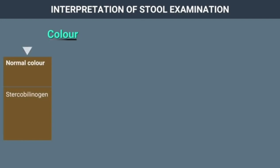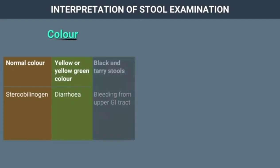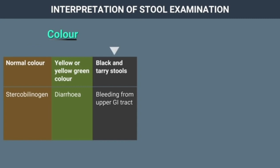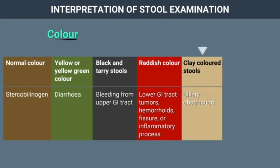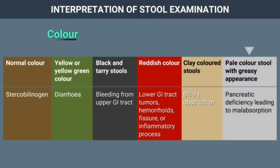Color: Normal color of stool is due to presence of stercobilinogen. Yellow-green color is seen in diarrheal stools. Black and tarry stools may be seen due to bleeding from the upper gastrointestinal tract. Reddish color is seen in lower GI tract tumors, hemorrhoids, fissure, or inflammatory process. Clay-colored stools are due to biliary obstruction. Pale-colored stools with greasy appearance are due to pancreatic deficiency leading to malabsorption.